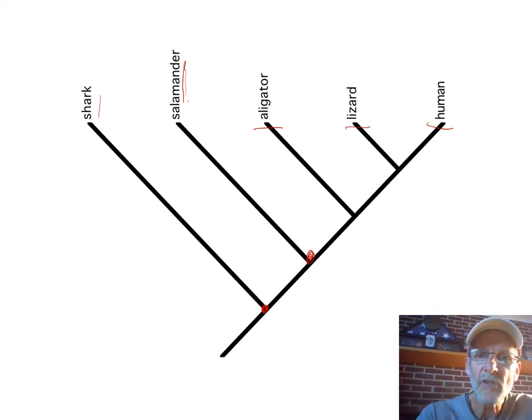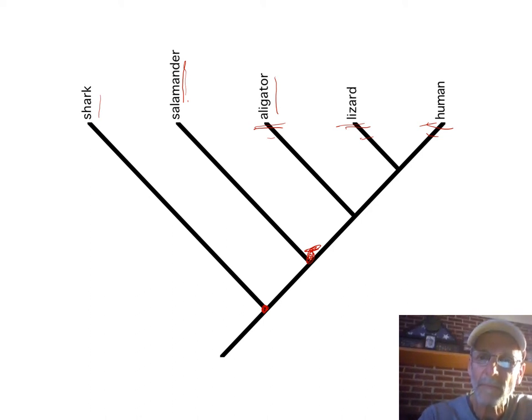So which of these other three is it most closely related to? Well, it's equally related to all three. Even though the alligator's name might be closer, that means nothing in terms of how closely related they are. Because all three of these have been evolving away from this common ancestor from the salamander for the same amount of time. And therefore, they're equally closely related.